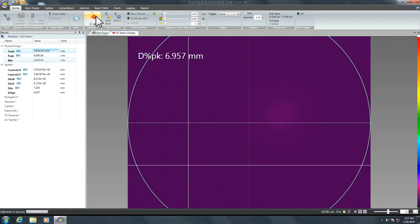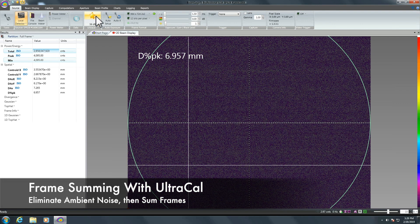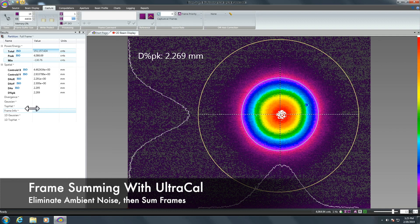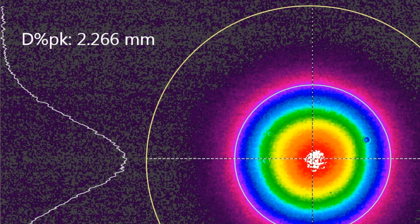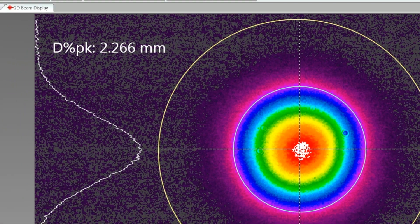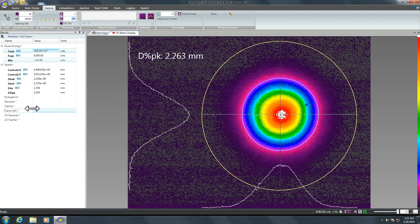By removing background noise with UltraCal, then summing 100 frames, the beam becomes very similar to the unattenuated beam. Beam Gauge measures the summed beam width equal to our previous measurement with no attenuation, showing that the UltraCal feature balances the camera noise component so that there is very little or no additional noise present when the image is summed 100 times.